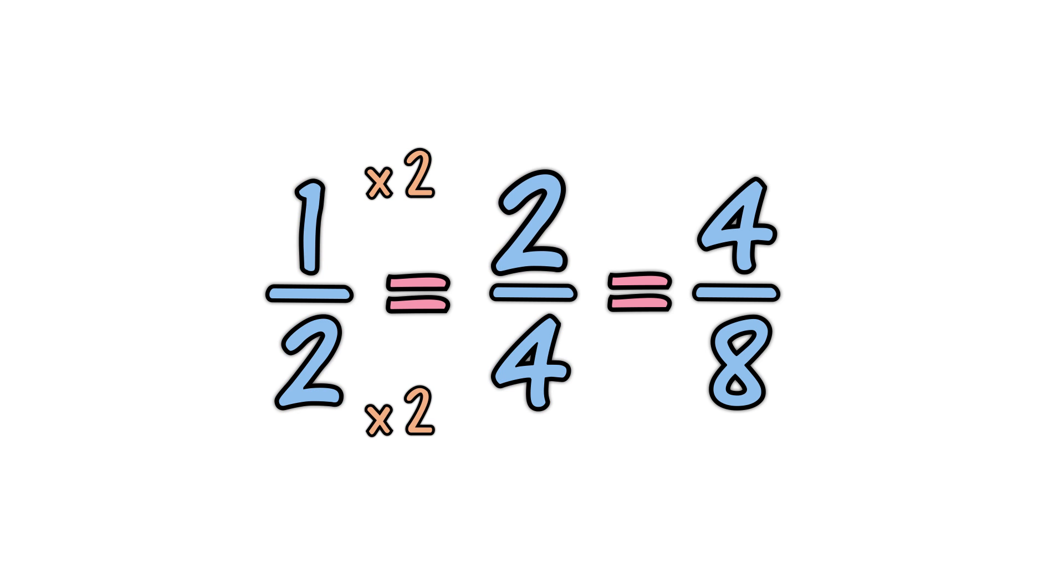And when you multiply the top and bottom of two-fourths by two, you get four-eighths, because two times two is four, and two times four is eight.